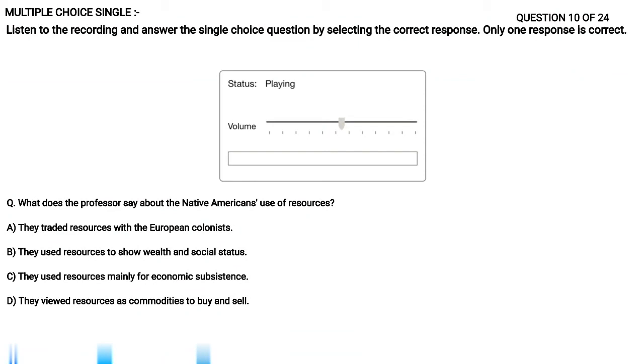The professor is talking about economics in colonial New England. We know that in colonial New England, the Native Americans, compared to the European colonists, had a far greater knowledge of what resources in the environment could be eaten or made useful. Native Americans used a wide range of resources for economic subsistence, and these resources were simply used by the family that acquired them. Only a few resources were accumulated for the purpose of showing a person's social status. For example, shells, furs, and ornaments of the hunt. Excuse me, Dr. Singer, but did they have a concept of wealth?